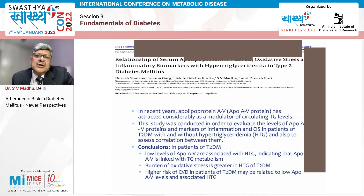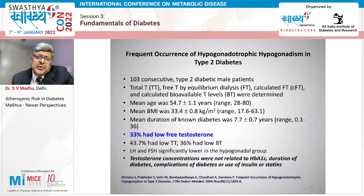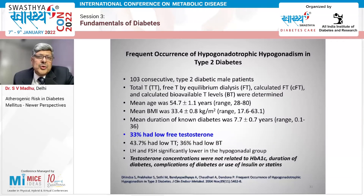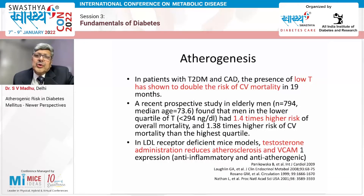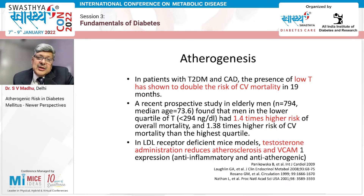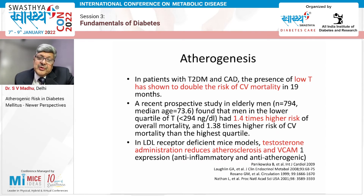Postprandial lipids and some associated co-markers may be novel areas that help explain some of the unexplained excess atherosclerotic risk in diabetic individuals. Shifting to hypogonadism and diabetes mellitus — about one third of diabetic subjects have low free testosterone, as shown by Dr. Dandona's group. Several studies have shown a doubling of CV mortality risk with low testosterone.